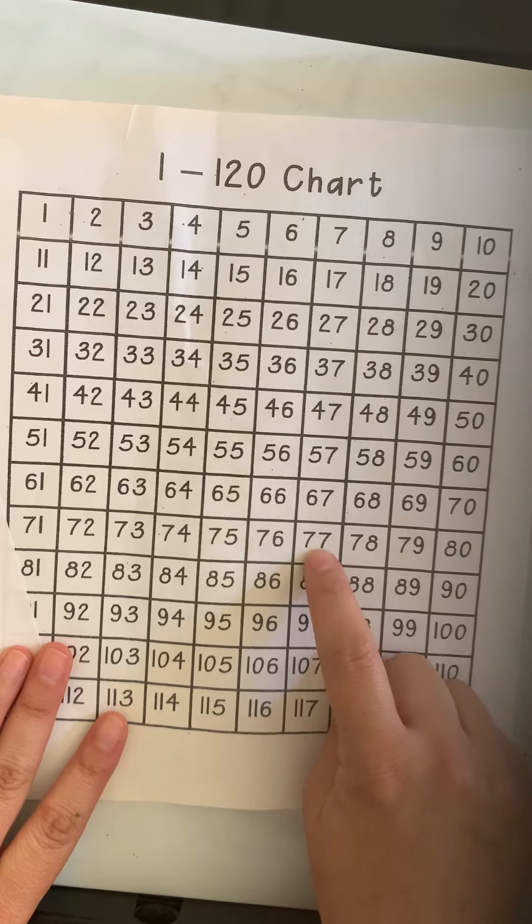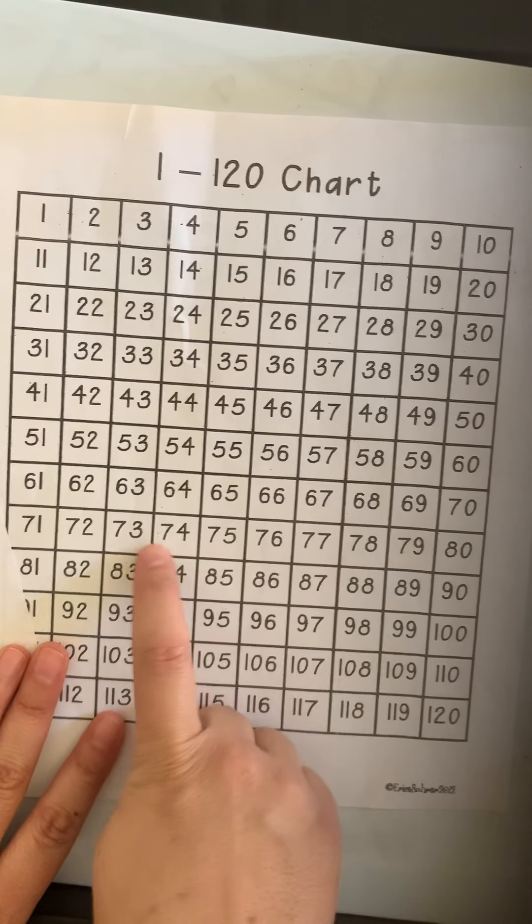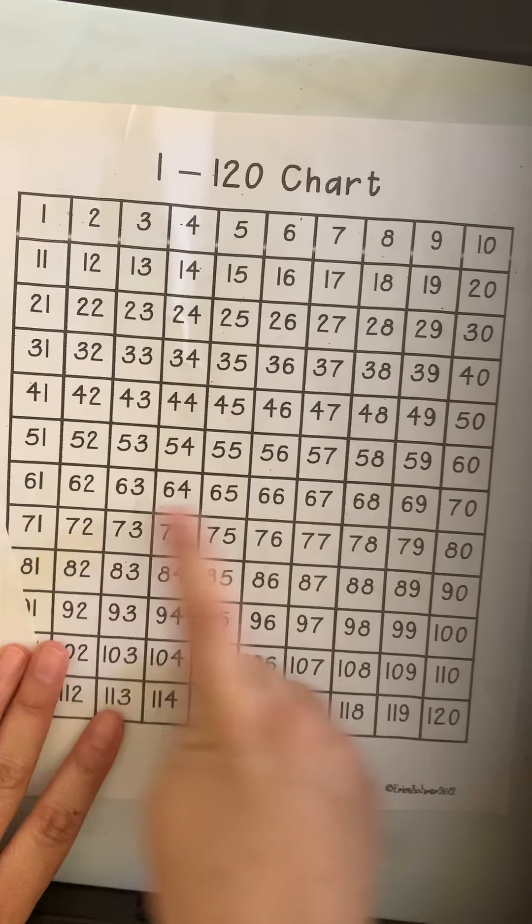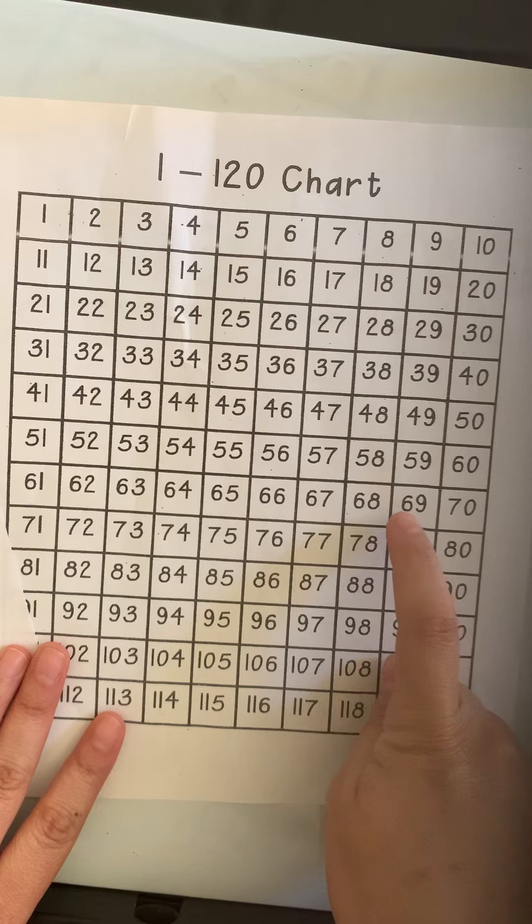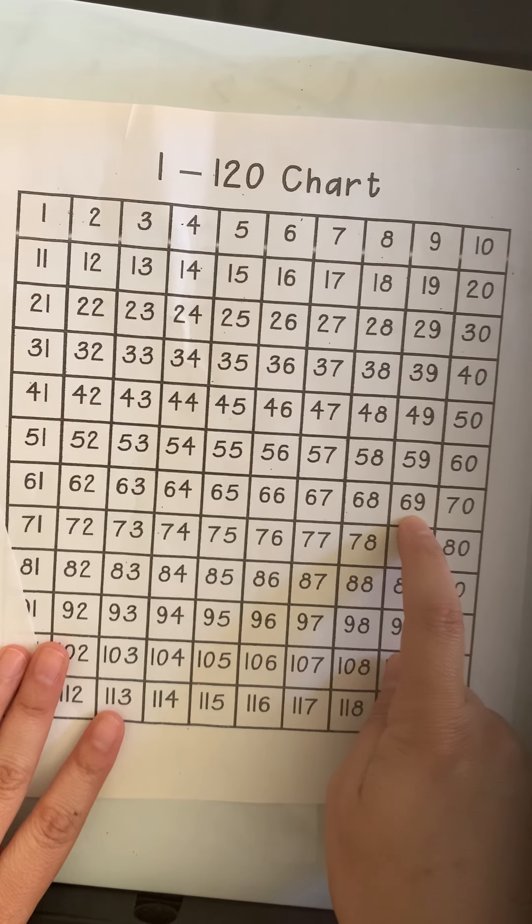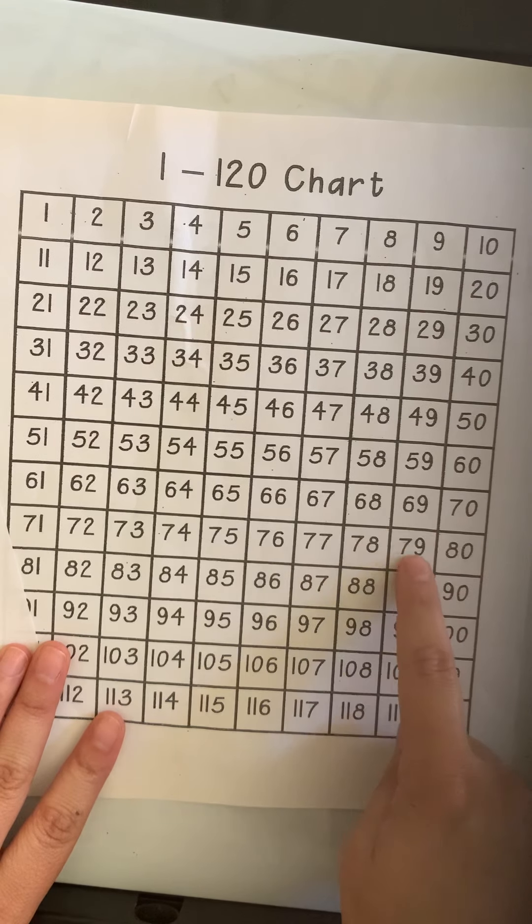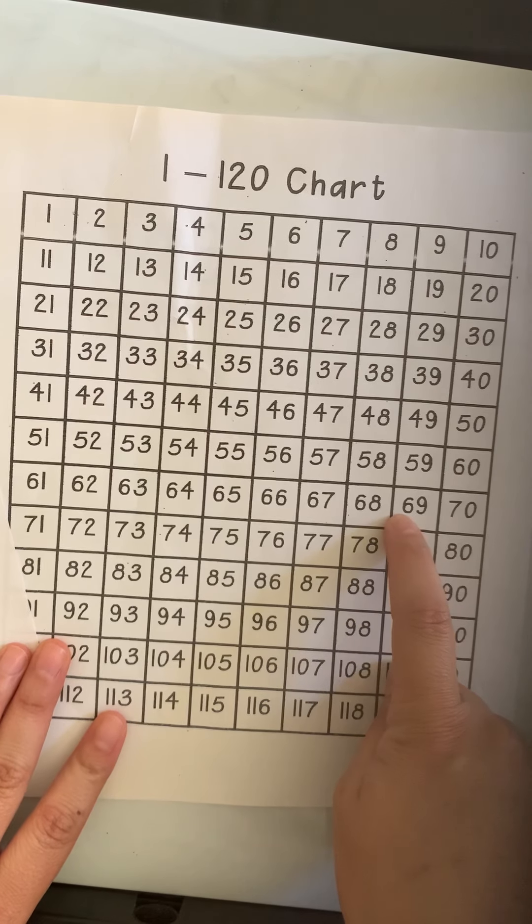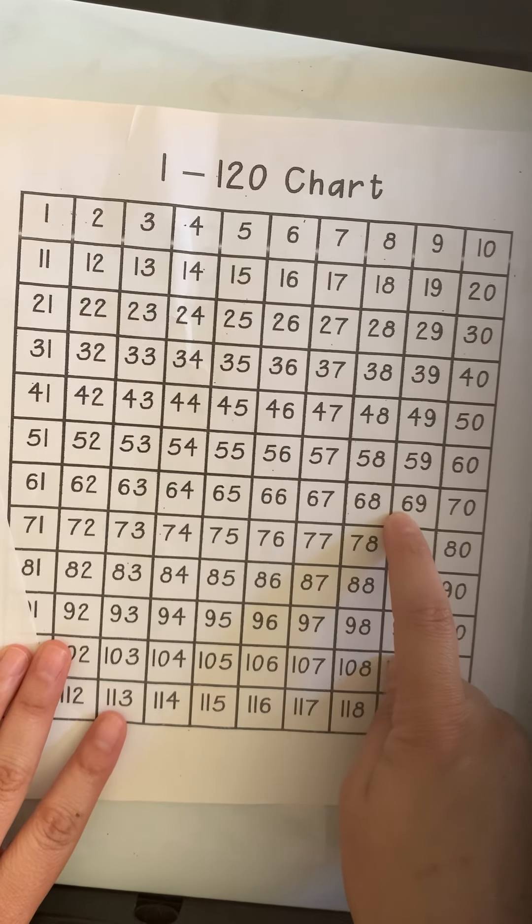Now I can count backwards by 10, or I can jump backwards by one row to find 10 less. So let's see, 79. There's 1, 2, I'm going backwards, 3, 4, 5, 6, 7, 8, 9, 10. And that gives us 69. Let's just double check. If I start at 79 and jump backwards, it's going to give me 69.